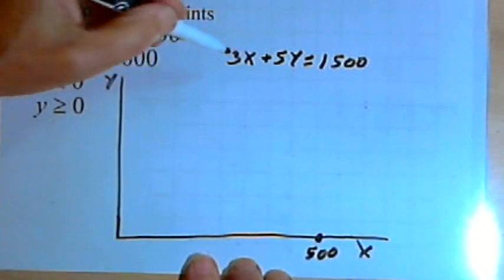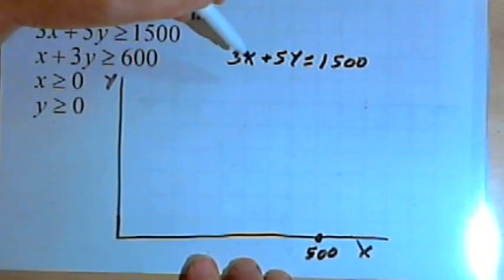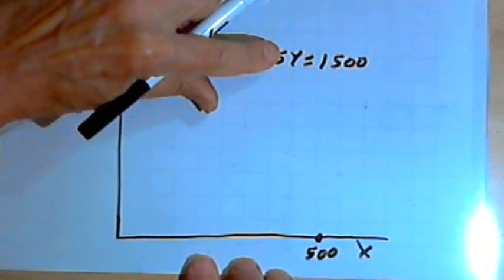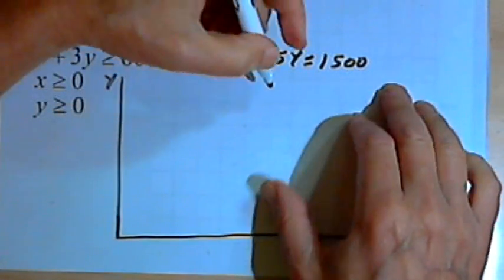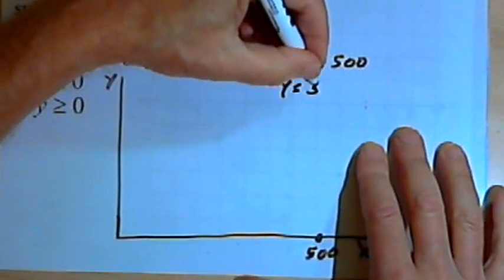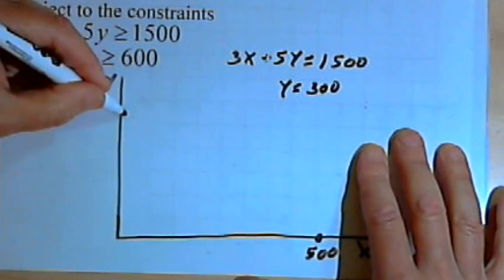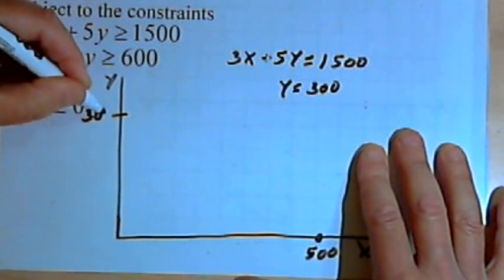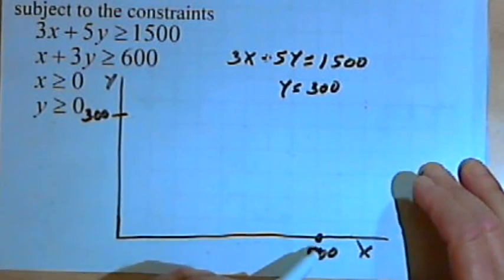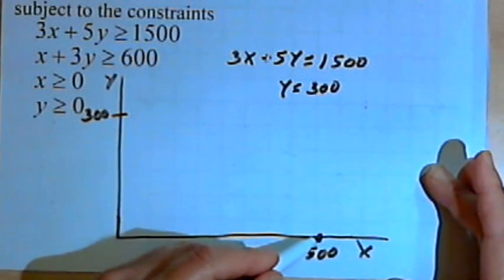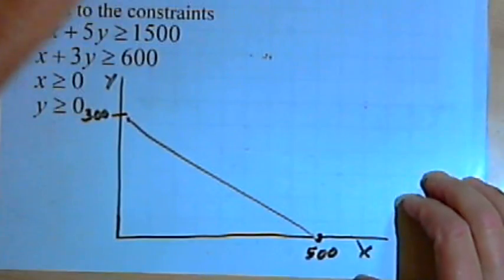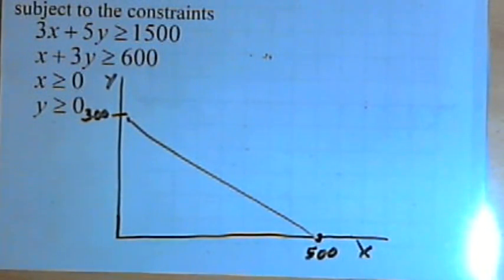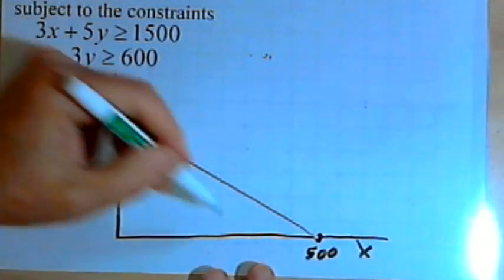The y-intercept happens along the y-axis where x equals 0. So that would mean my equation would be 5y equals 1500, which means y would equal 300. I've got the x and y-intercepts. I can connect those dots, and since the inequality was greater than, I'm going to shade the area above this line.